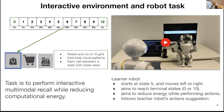Our interactive environment is composed of one grid with 11 cells that correspond to states. Each cell hosts a set of visual patterns with noise rates, and these noise rates are written under each cell. The learner robot forms multimodal inputs by combining the visual pattern and corresponding audio labels. In this setting, the learner robot aims to perform interactive recall while reducing the computational energy.